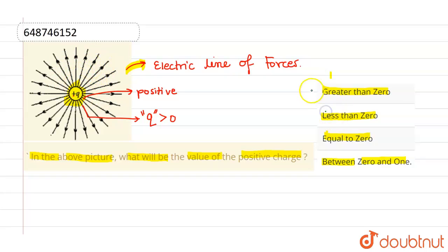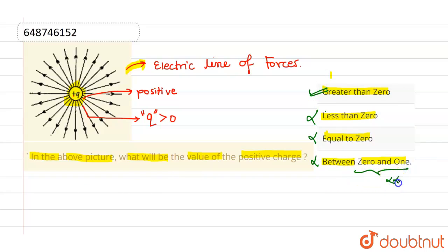So the correct option is greater than zero, which is option one, and all other options are incorrect. The last option — between zero and one — is not appropriate because the charge can be greater than one also. So we cannot say that is always true, but option one is always true: Q will be greater than zero.